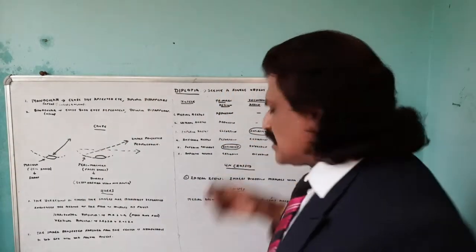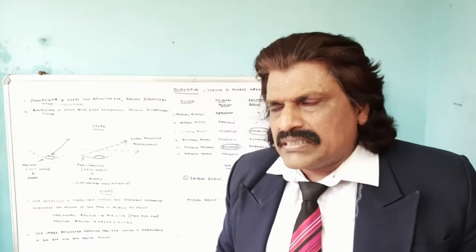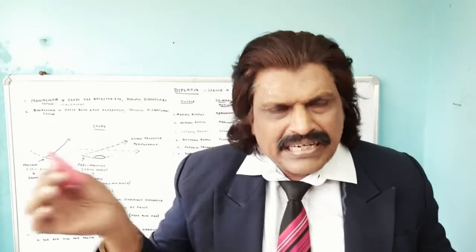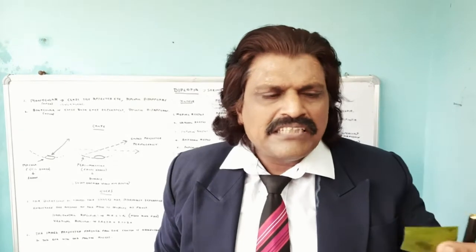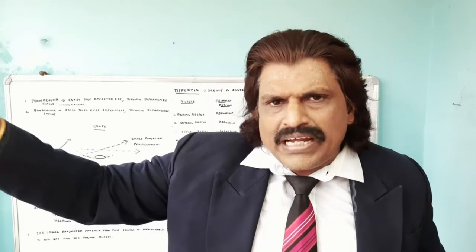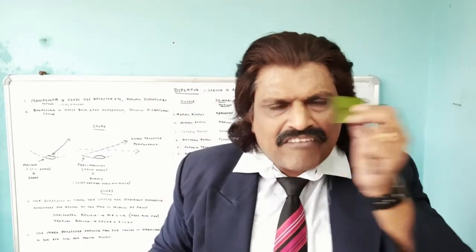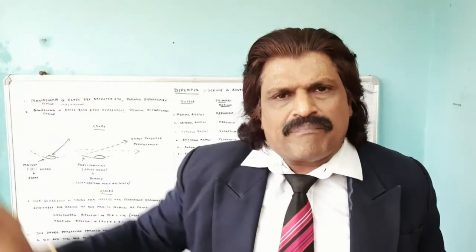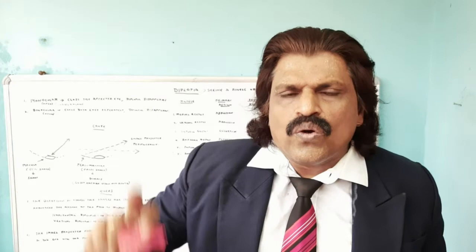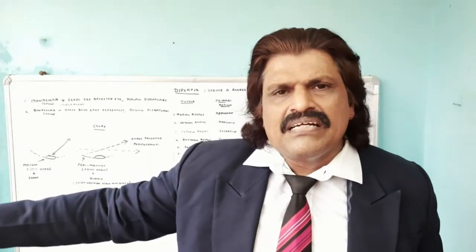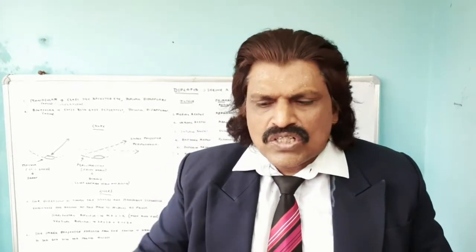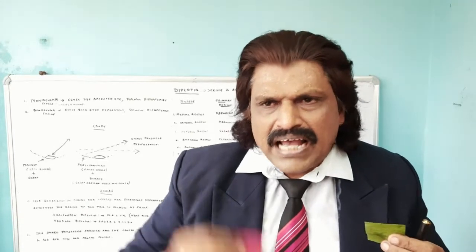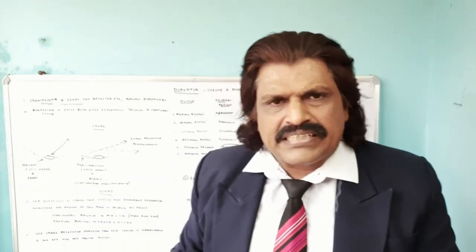To understand crossed and uncrossed diplopia, we need to understand an important principle. Imagine I put a red paper on my right eye — traditionally red is placed on the right — and green on my left eye. When I look to the right with the right lateral rectus and left medial rectus potentially affected, I get diplopia with maximum separation of images, which could be due to either the right lateral rectus or the left medial rectus.